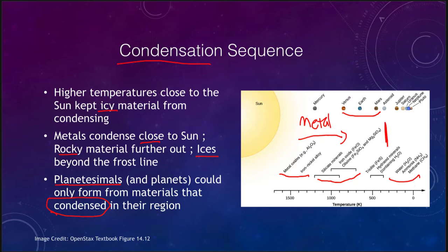Metals were a very small part of the solar nebula, so you didn't have a lot of material to build from. Rocky materials were a larger portion, giving you more material to build planets. But the vast majority of the solar nebula would have been hydrogen and helium and therefore hydrogen compounds — things like water, methane, and ammonia. So you had lots and lots of these materials, meaning you were able to form very large planets because when you got to the outer solar system, a lot more material was able to condense.